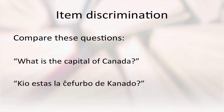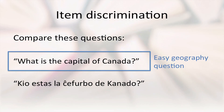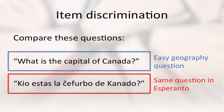The second statistic we're going to look at is item discrimination. To understand discrimination, consider these two questions that we might put on a Canadian geography test. The first question is an easy geography question, and we'd expect a class to do quite well on it. The second question is the same easy question, but written in Esperanto. A typical Canadian class will do terribly on this one, not because it's a difficult question, but because they don't understand the language it's written in.